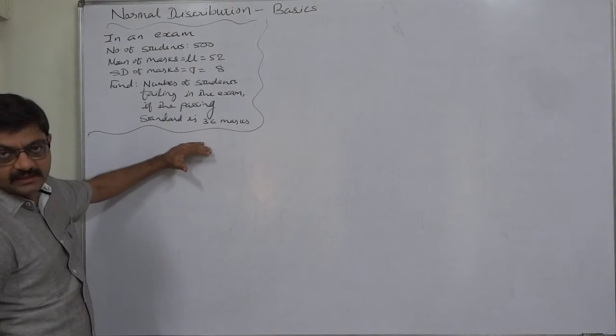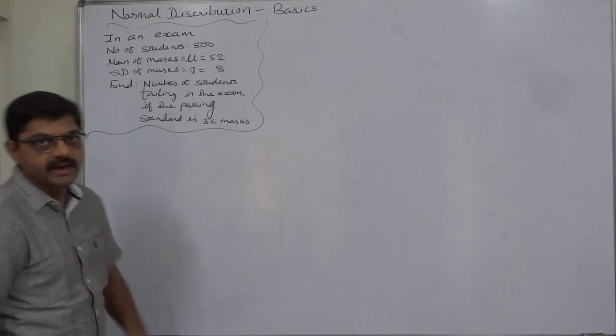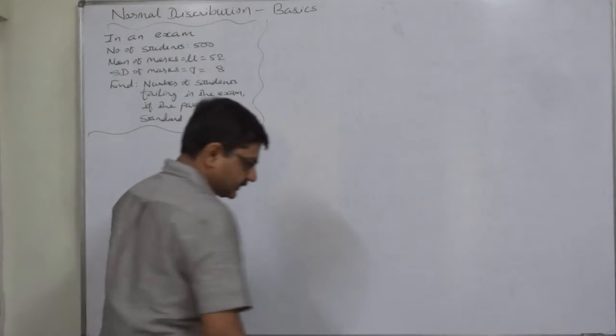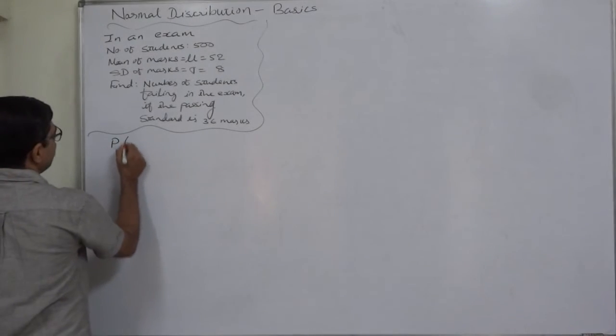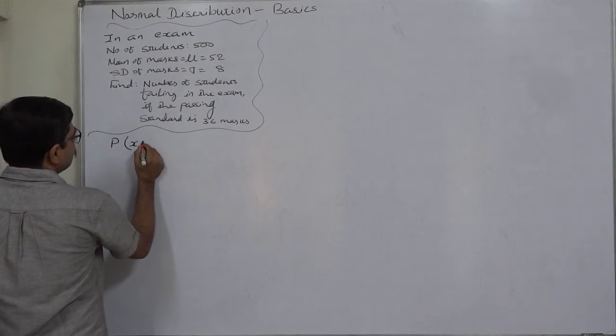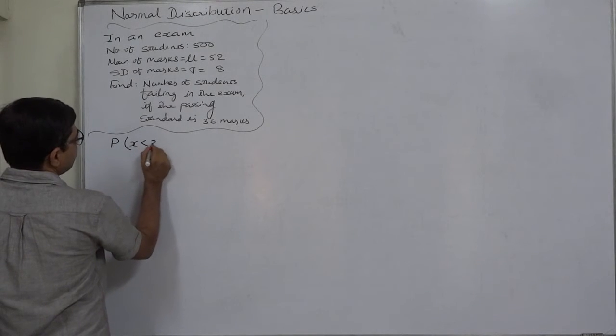Who fails in the exam? The student who gets marks less than 36. First, we have to find out the probability of any student getting marks less than 36.